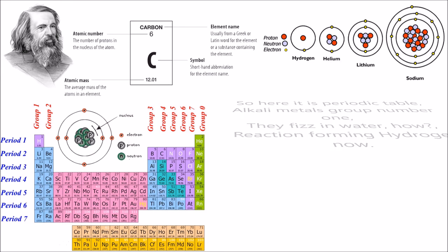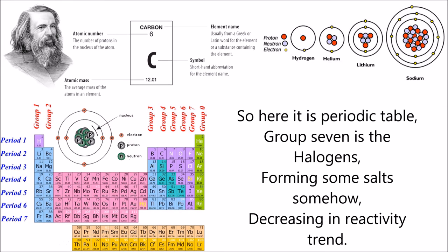So here it is, periodic table, group seven is the halogens, forming salts somehow, decreasing in reactivity trends.